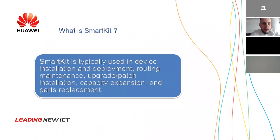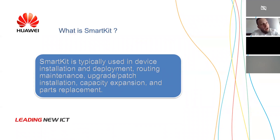What is SmartKit? SmartKit is used for device installation, deployment, and maintaining. But SmartKit can cover more than this — it's not just used for storage. It can be used for cloud and for servers. So you can upgrade your entire data center if you have more than one storage, server, or cloud computing resource by using SmartKit.